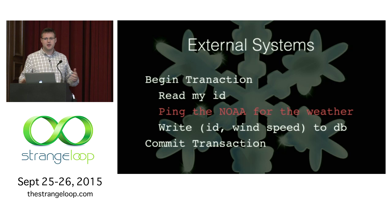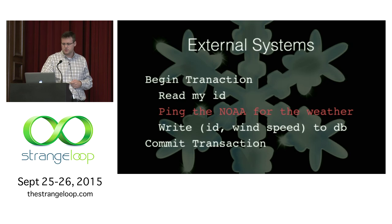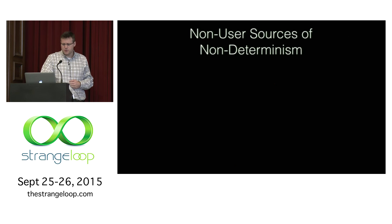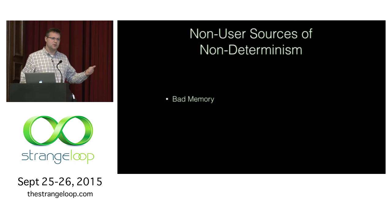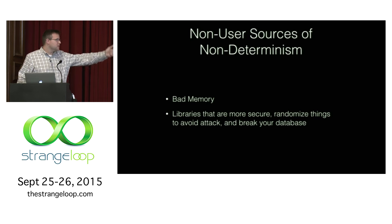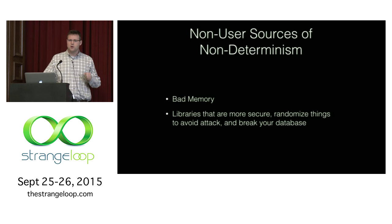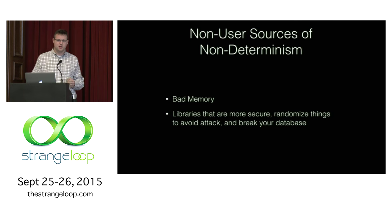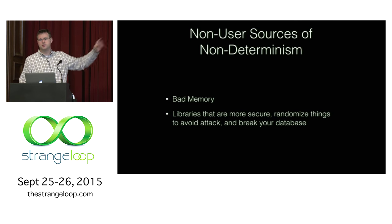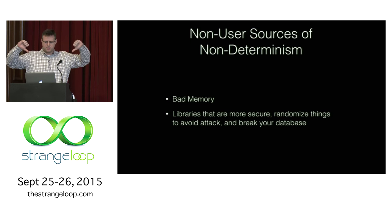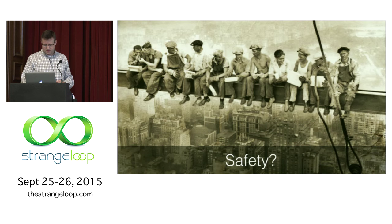There are some interesting non-user sources of non-determinism we've run into at VoltDB. Obviously bad memory is one — if you're trying to do these things without ECC memory, you're probably going to have a bad time. Interestingly, there are libraries that, for security purposes, randomize the order of things they do to avoid hackers figuring out memory layout. But these also break your non-determinism. A lot of times people complain when someone introduces something like this — the security people say yay, the data people say boo.